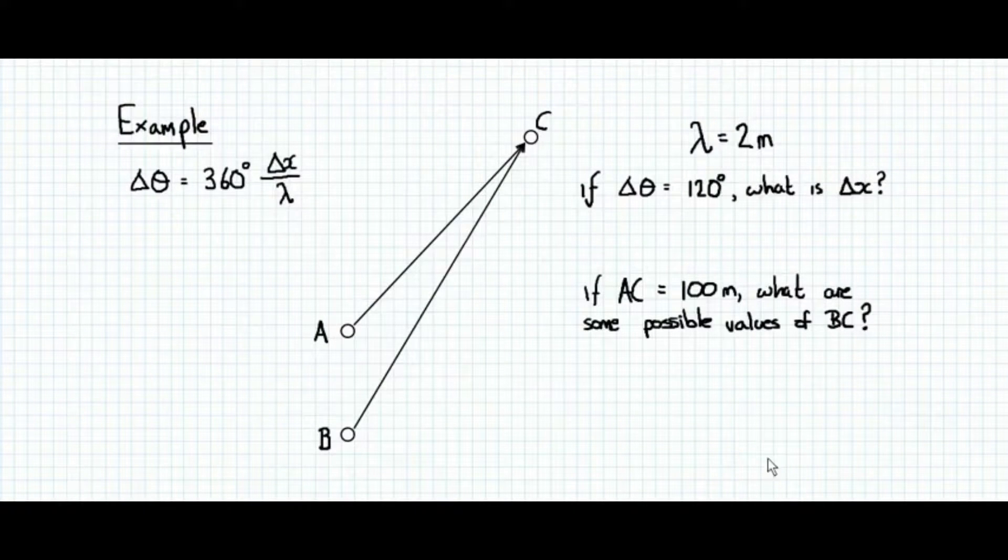So let's look at an example. Here I have two transmitters of waves, transmitter A and transmitter B. We don't know how far apart they are, but they are both detected at position C. And we have a wavelength given in this question of 2 meters. So the question is, if the phase difference is 120 degrees, what is the path difference? We can rearrange this equation to get our phase difference multiplied by our wavelength and divided by 360 degrees. That gives us two thirds of a meter.